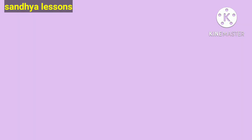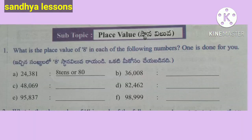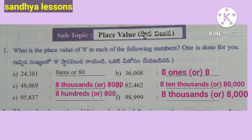Worksheet 5. First: What is the place value of 8 in each of the following numbers? One is done for you. Place value of 8 in 24,381: 8 is in the tens place, so place value is 80. Place value of 8 in 36,008: 8 is in the ones place, so place value is 8. Place value of 8 in 48,069: 8 is in the thousands place, so place value is 8,000.